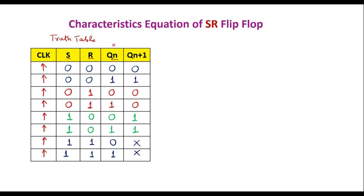For simplification, we represent Qn as Q and the next state as Q+. In an edge-triggered flip-flop, it works along with the positive edges of the clock. If S=0, R=0 and present state is 0, then next state is 0. If present state is 1, next state is 1 — meaning no change. If S=0 and R=1, next state is 0 regardless of present state — the flip-flop is in the reset state.